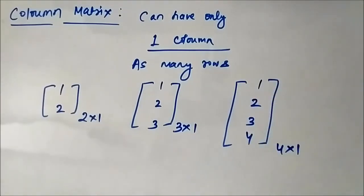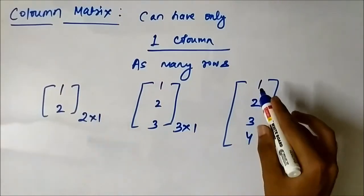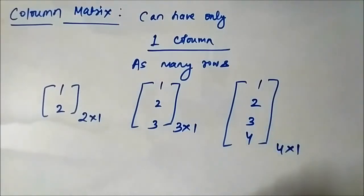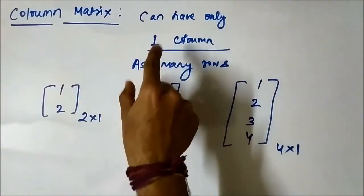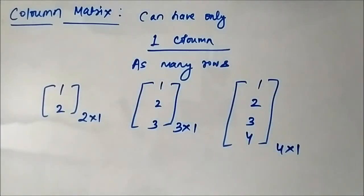Similarly, we can go on and on. We can add as many rows as we can, but the only restriction is that it should have only 1 column. So the column matrix can have as many rows as it can, but the only restriction is that it can have only 1 column.